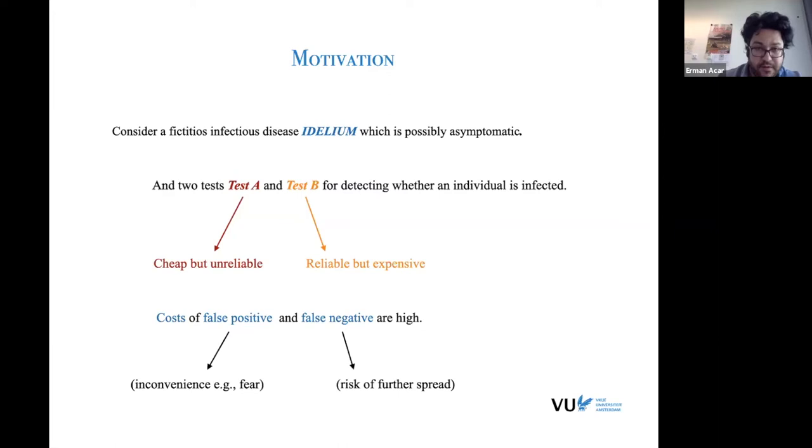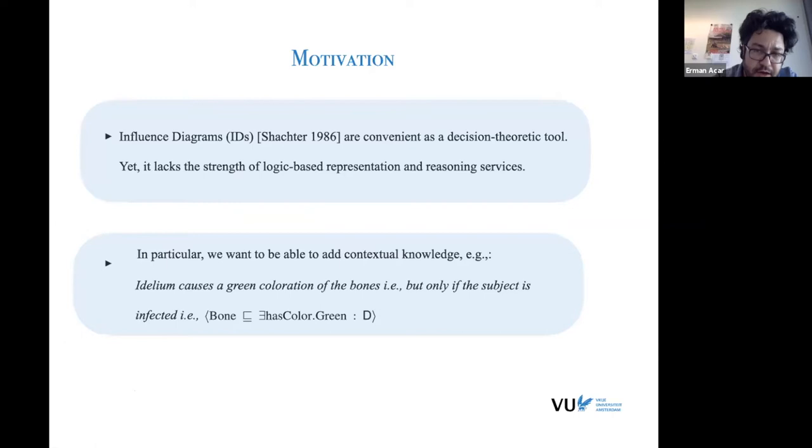And of course, in a decision scenario, the costs for such situation would be mostly about false results. It can be false positive or false negative that you don't want. It might lower your life quality. You might think that you are sick, but you are not, or it might cause further spread of the disease. So such scenarios can be nicely modeled in influence diagrams, a convenient probabilistic graphical model decision-making tool. Yet, of course, these classical KR representations lack the strength of logic-based representation and reasoning services. For instance, we might be interested in asserting some sort of axiom saying that idalium causes the green coloration of the bones, but only if the subject is infected. And this particular axiom, we might desire to hold in some particular context.